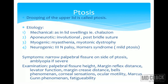Ptosis is the drooping of the upper eyelid. The classification of ptosis etiology is: mechanical, as in lid swelling like chalazion; aponeurotic, like involutional and post-surgery or post-bridal suture; myogenic, as in myasthenia and myotonic dystrophy; and neurogenic, as in third nerve palsy and Horner syndrome. Ptosis in Horner syndrome is always mild, not as severe as in third nerve palsy where it is nearly total. Symptoms include a narrow palpebral fissure; if it occurs at an early age it can lead to amblyopia.